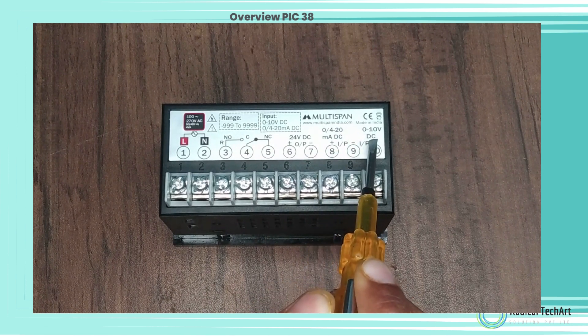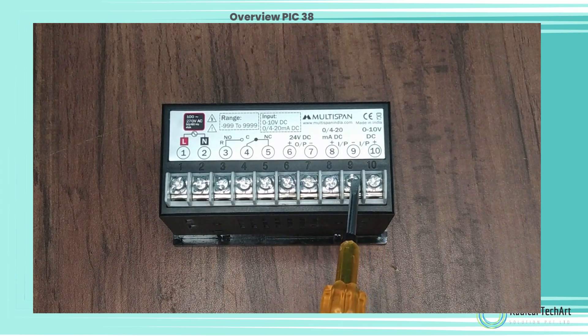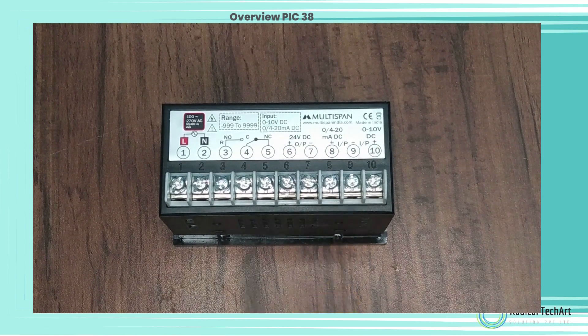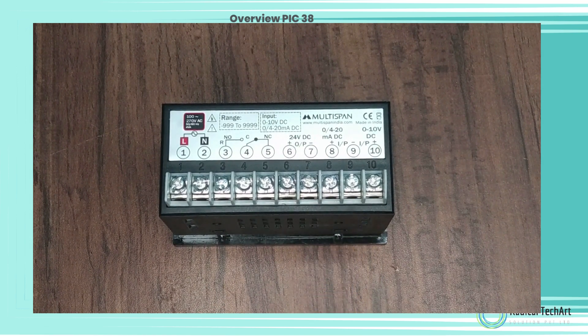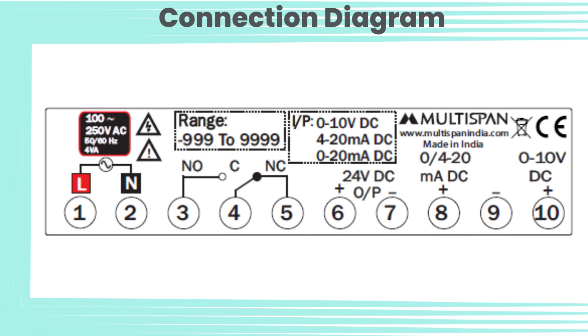On this 6th and 7th number you will get 24 volt DC output. In input on 8th you will get 0 to 20 and 4 to 20 milliampere DC and in 9th and 10th you will get 0 to 10 volt DC.